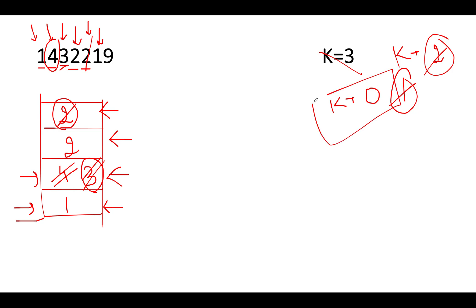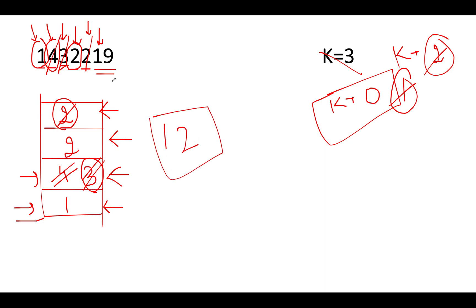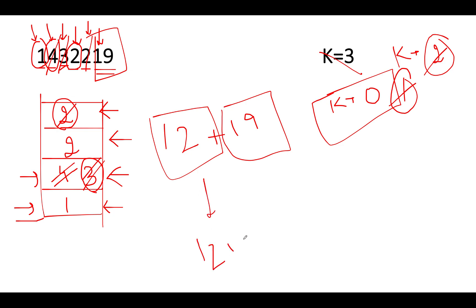With k equal to 0, no more deletions are needed — we have identified all the elements to be deleted. We deleted 4, 3, and 2. What remains in the stack is 1 and 2, forming the prefix 1, 2. Appending the remaining unprocessed elements 1 and 9 gives us the final result 1219. Pretty simple and straightforward.